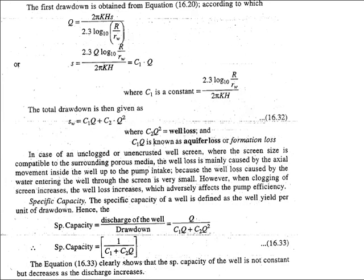Specific capacity is described as the yield per unit drawdown. Yield is Q and drawdown is c1·Q + c2·Q², so specific capacity equals Q divided by (c1·Q + c2·Q²), which simplifies to 1/(c1 + c2·Q). This shows that the specific capacity of a well is not constant but decreases as discharge increases. That concludes today's session; the next video will cover the next topic of hydrology.